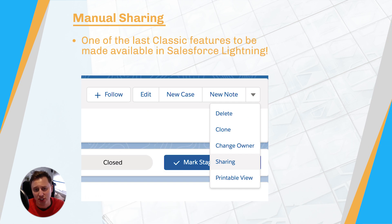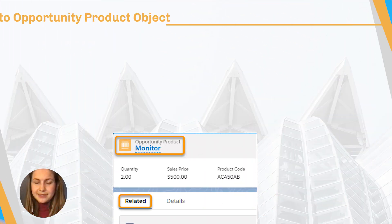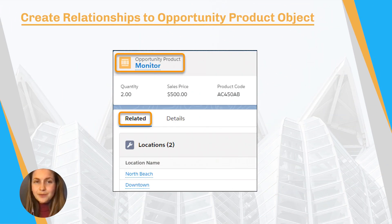An overdue feature that I have seen a lot of admins rejoicing about. Manual sharing provides a way for users to manually share a particular record. This was a staple feature of Classic, but has yet to be ported over to Lightning. Until now.